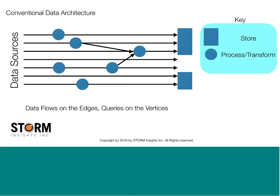Let's look at the issue of architecture for a minute. Here I've got a simple representation of a typical conventional architecture. I have multiple data sources, with data flowing from one place to another. This is like a directed graph — the data comes into these circles where some processing or transformation happens, and then it goes out and eventually gets stored. The key here is the actual analysis is done when the data is at one of these points along the way. It's flowing on the edges and the queries are on the vertices, as opposed to the lines.